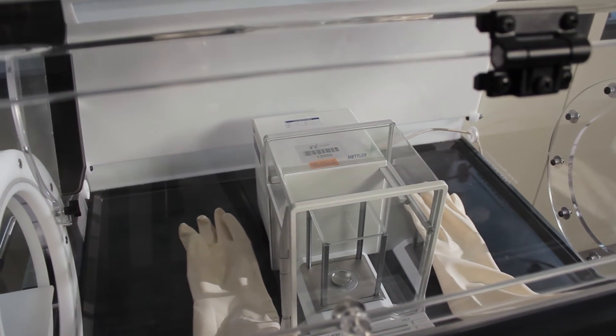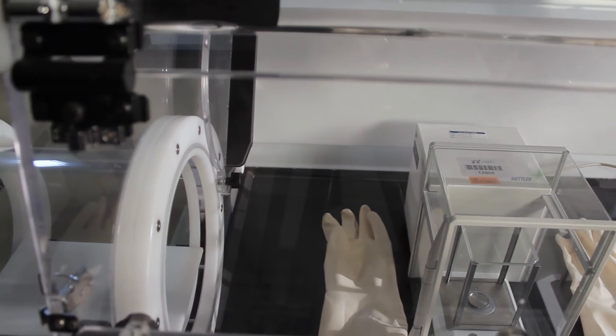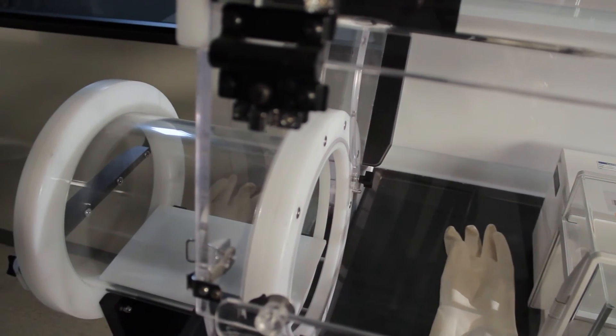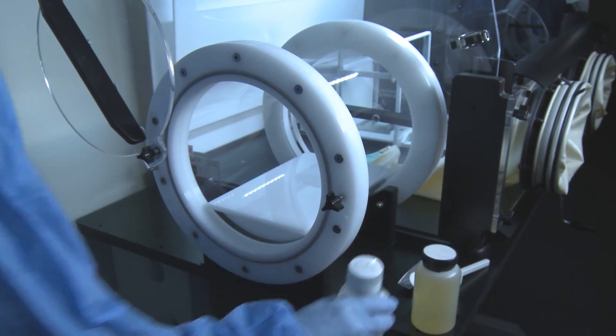This particular unit allows the operator to control the interior atmosphere via inlet and purge valves located on the top and side of the unit. Hinged, sealed doors secure the environment, ensuring its stability.